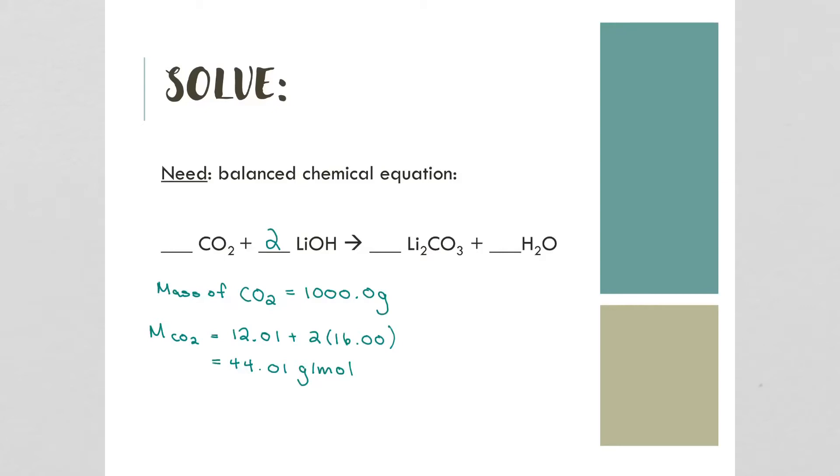Then we can find the molar mass of lithium hydroxide. That's equal to the molar mass of lithium, 6.94, plus the molar mass of oxygen, 16.00, plus the molar mass of hydrogen, 1.01. So that is equivalent to 23.95 grams per mole.